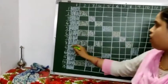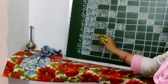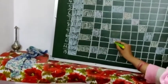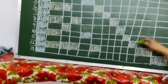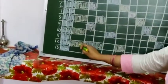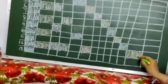Factors of nine: one, three and nine. Factors of ten: one, two, five and ten. Factors of eleven: one and eleven. Factors of twelve: one, two, three, four, six and twelve. Then factors of thirteen: one and thirteen.